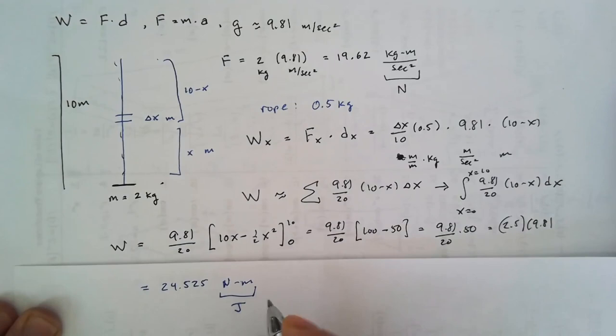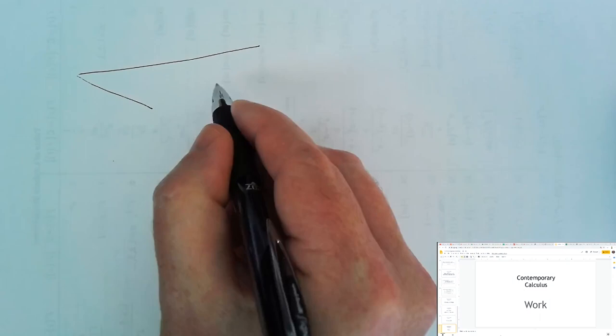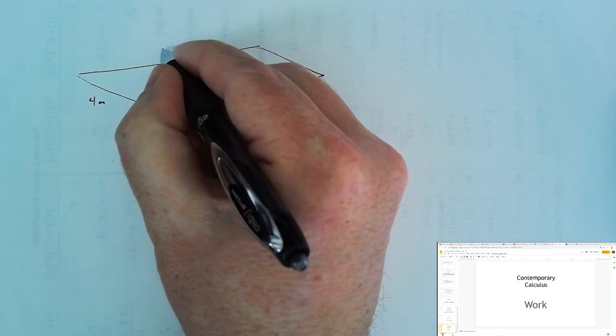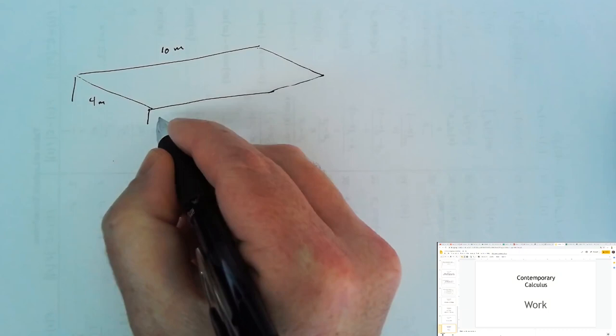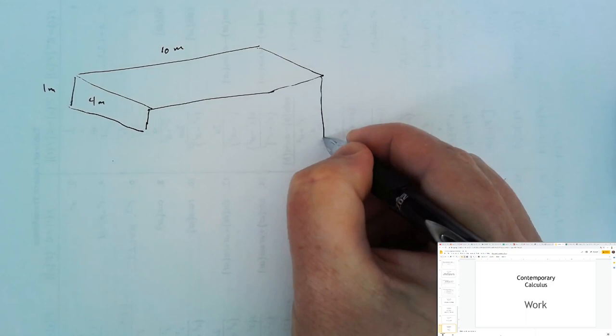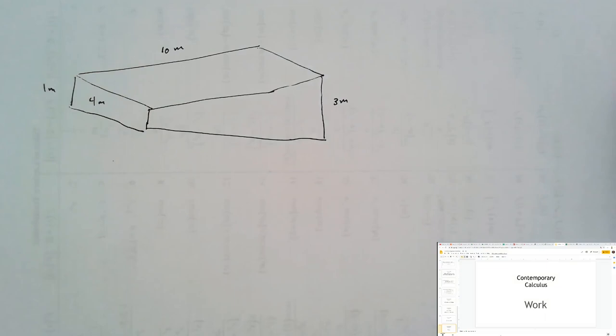Let's look at one more work example. If we have a swimming pool that measures 4 meters across by 10 meters in length, and this swimming pool is 1 meter deep at the shallow end, but 3 meters deep at the deep end, and we fill this swimming pool with water,